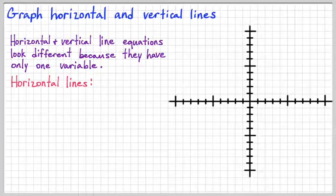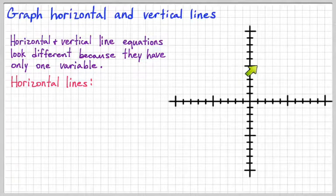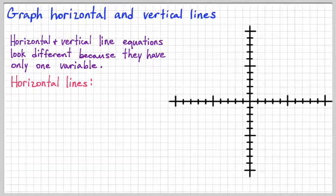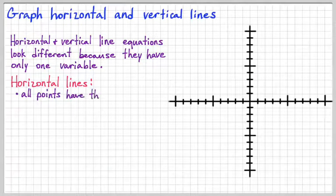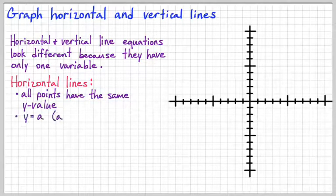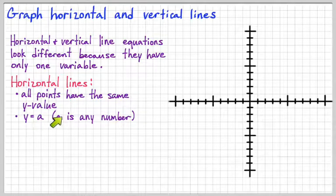When you have a horizontal line, it runs this way, so all of the points on the line will have the same y value, and therefore the equation looks like y equals some number. So I've written y equals a, and a can be any number.